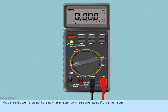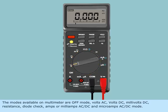Mode selector is used to set the meter to measure specific parameter. The modes available on multimeter are OFF mode,